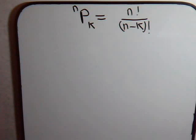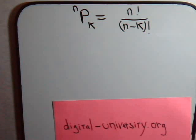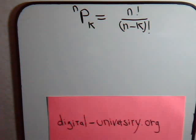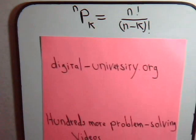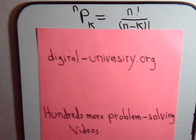Which reminds us that a lot of these videos when we're posting them on YouTube might end up being shotgunned all over the place. And if you found this on YouTube you might find it more useful to go to the website at digital-university.org. There you will find all the videos are listed in their proper sequence. Also, at the website there are hundreds of more problem solving videos and different types of subjects that might be of help to you.